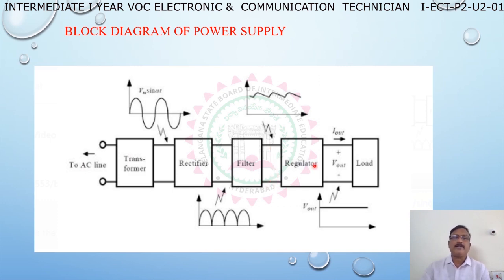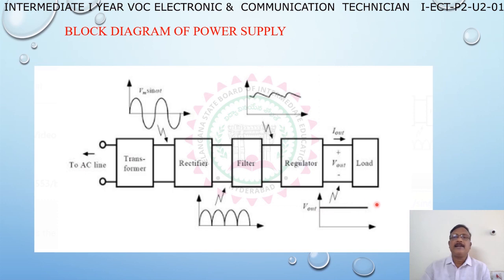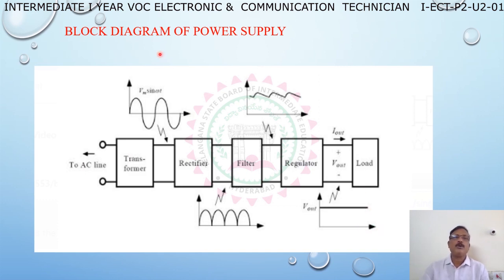Next is the regulator. The regulator provides a constant DC output and removes fluctuations. The block diagram of a DC power supply has five blocks.